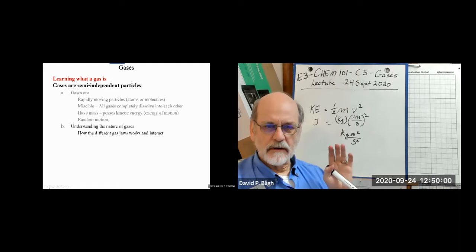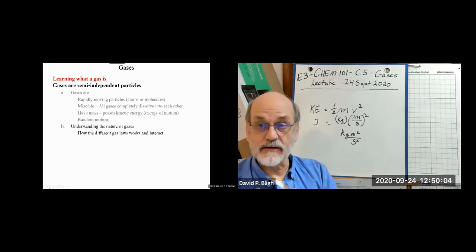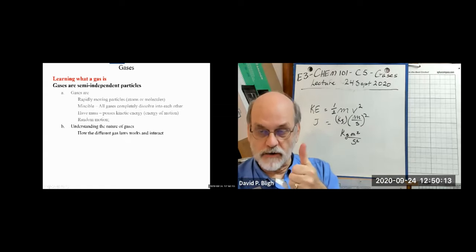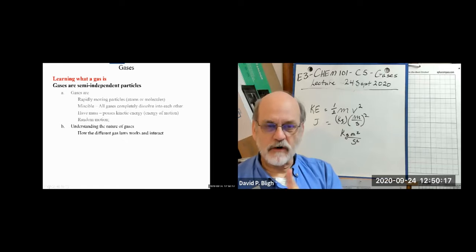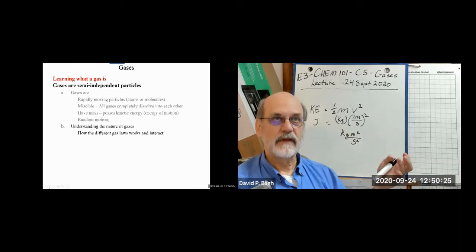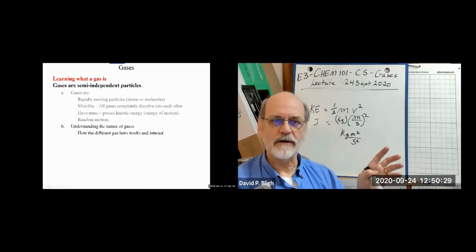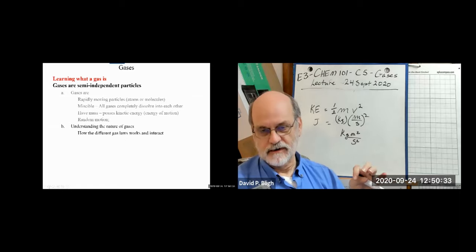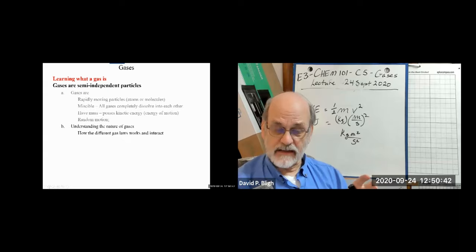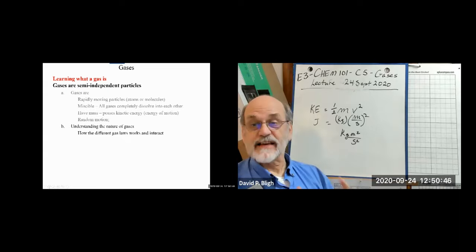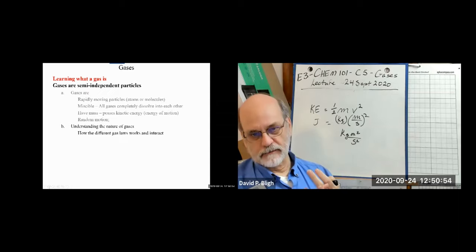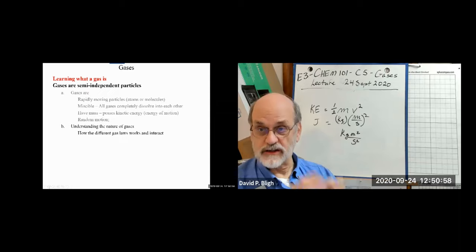To characterize gases quantitatively, we use laws — and that's how it happened historically. Scientists called 'natural philosophers' in the end of the Middle Ages through the Enlightenment investigated gases first because gases were accessible given the knowledge and equipment available at the time. As it turned out, that was fortunate because there are characteristics common to all gases regardless of what the gas is.